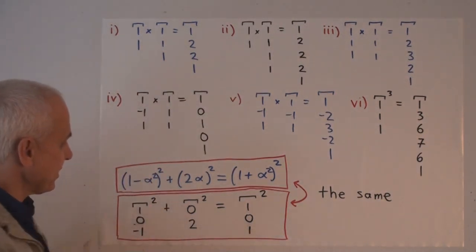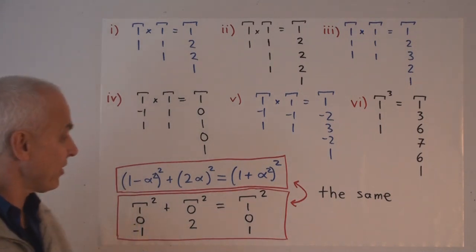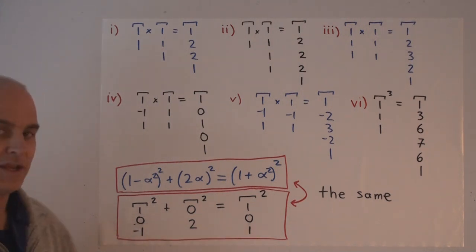Here's a pleasant little identity. This one here is essentially Pythagorean triple type of identity. And it's a manifestation in polynumber form.